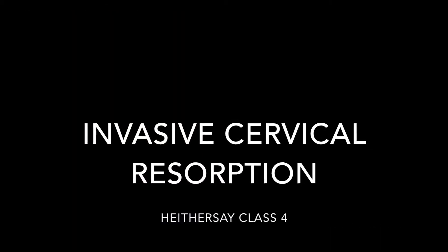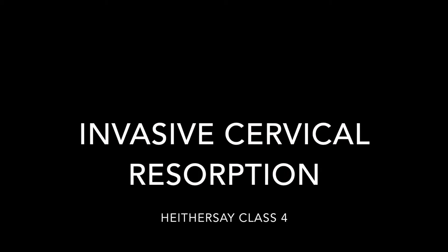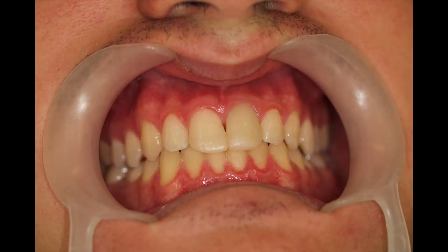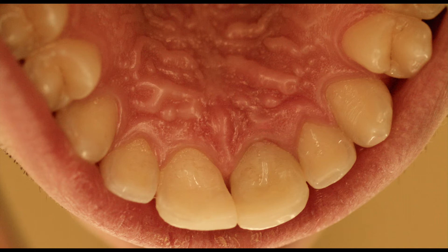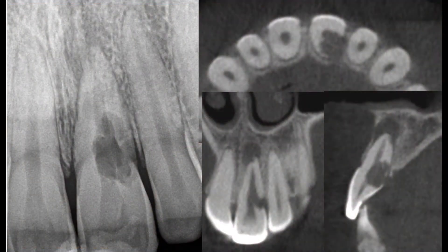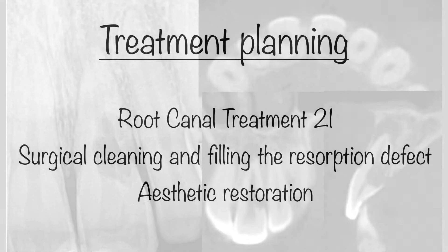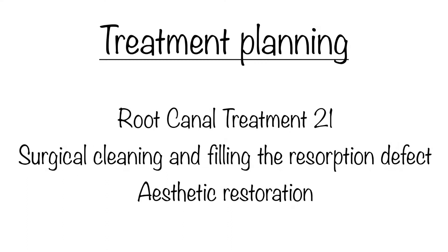An asymptomatic patient presented with light discoloration in tooth 21 with negative vitality. The periapical radiograph showed a periapical lesion and a large external resorption, confirmed with CBCT. This was diagnosed as invasive cervical resorption class 4 with pulp necrosis.